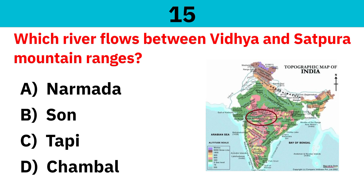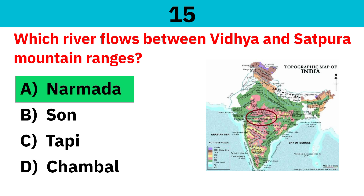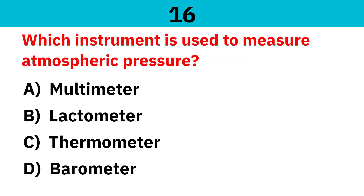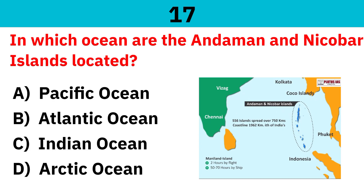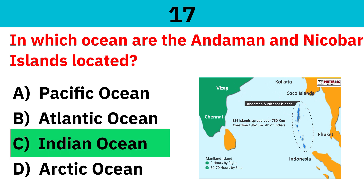Which river flows between the Vindhya and Satpura mountain ranges? Correct answer is Narmada. Which instrument is used to measure atmospheric pressure? Correct answer is Barometer. In which ocean are the Andaman and Nicobar Islands located? Correct answer is Indian Ocean.